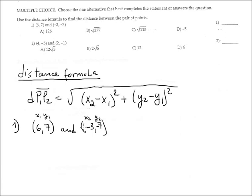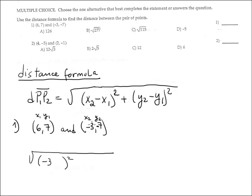Plug it in the formula. This is 6 and it's negative 1, so it's negative. The formula is the square root, open parenthesis, squared subtraction quantity X2 — who is X2? Minus 3. Minus 3 is X2, and who is X1? Is 6. And the formula has minus 6.